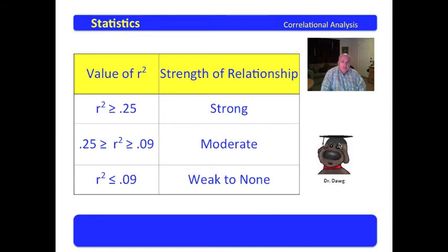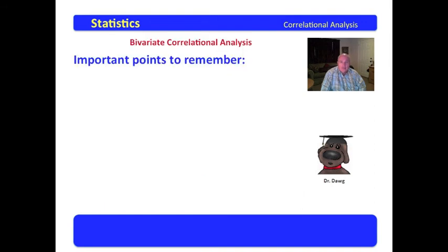Here's your table to examine your values. If r square is greater than or equal to 0.25, we will call it strong. If it falls from 0.25 to 0.09, we'll say it's a moderate correlation. And if it's less than 0.09, we'll say that it has weak to no correlation.